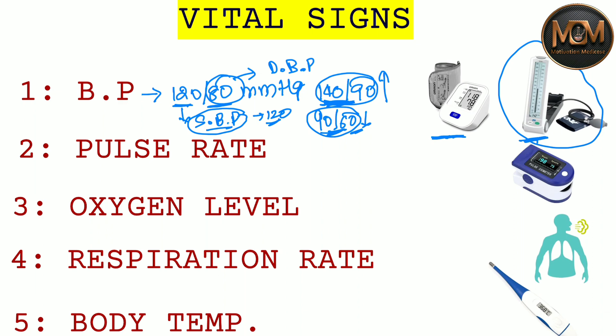Now let's talk about pulse rate. Pulse is a wave of blood formed by the contraction of the left ventricle. The normal value of the pulse rate should be 72 beats per minute.